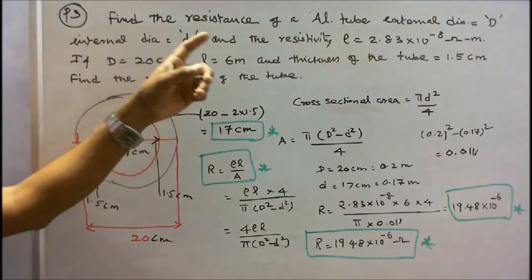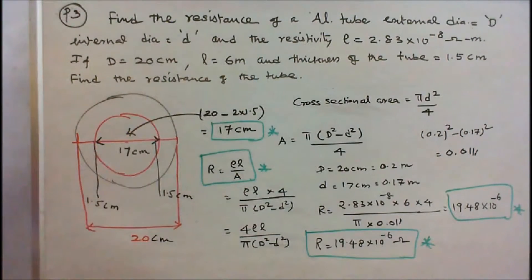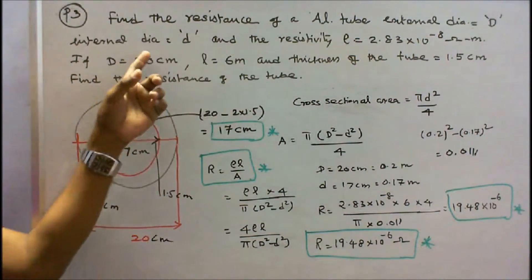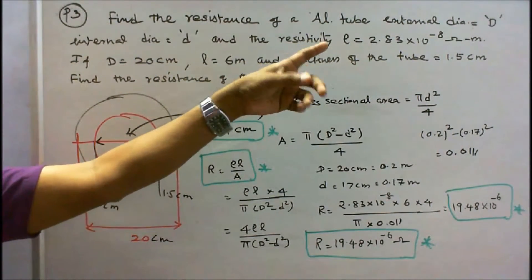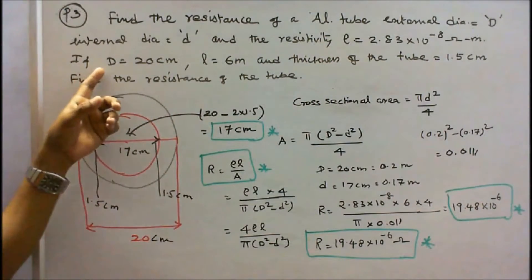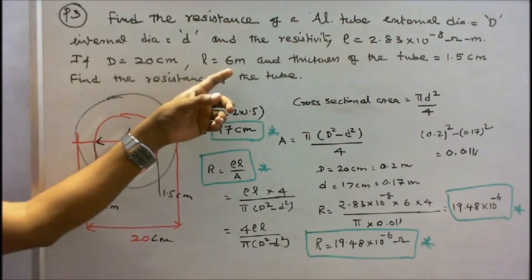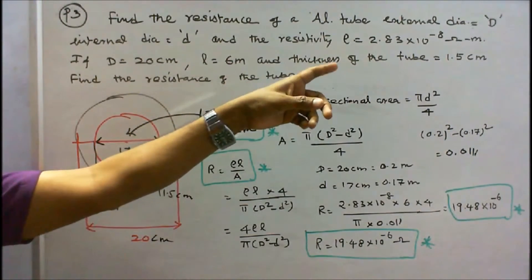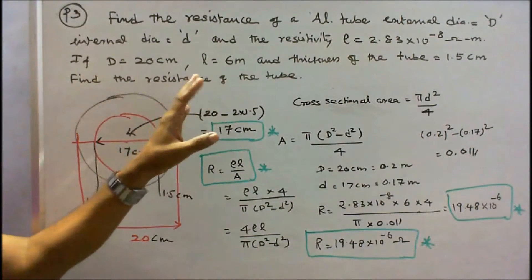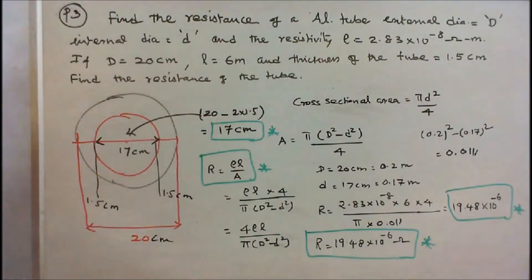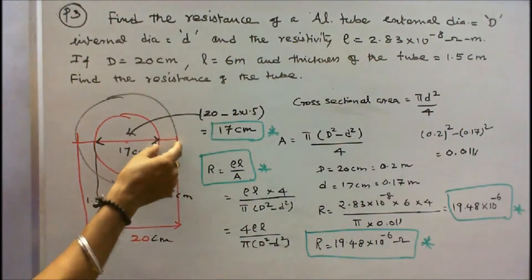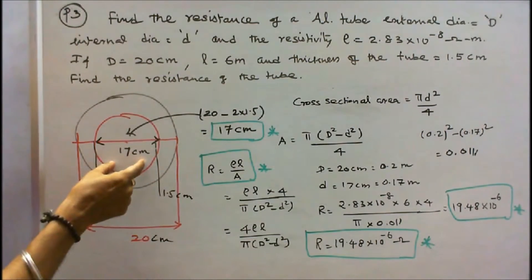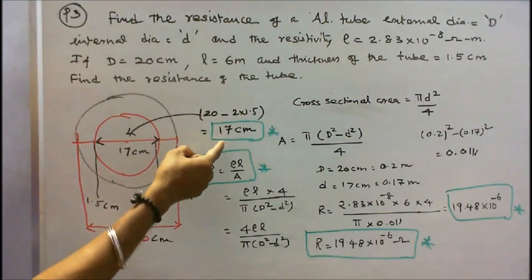Problem number three: find the resistance of an aluminum tube with external diameter capital D, internal diameter small d, and resistivity 2.83 × 10⁻⁸ ohm-meter. Given capital D = 20 cm, length = 6 meters, and wall thickness = 1.5 cm. Therefore, small d = 20 − 2 × 1.5 = 17 cm.